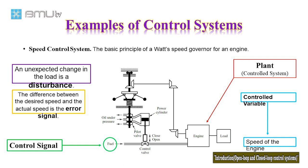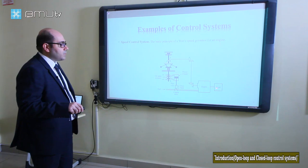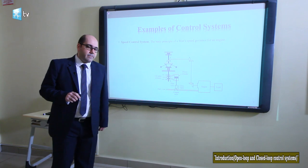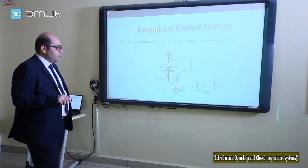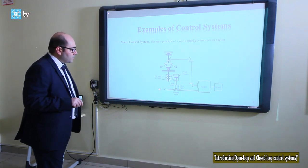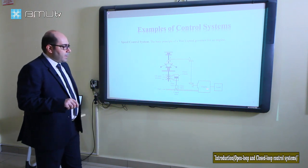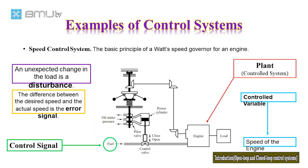If the actual speed of the engine drops below the desired value, the governor speed decreases, so the control valve moves downward and more fuel enters the engine, causing the speed to increase until it reaches the desired value. On the other hand, if the speed of the engine increases, the control valve moves upward, decreasing the amount of fuel going to the engine until the speed returns to the desired value.